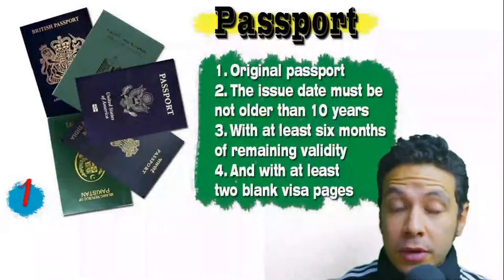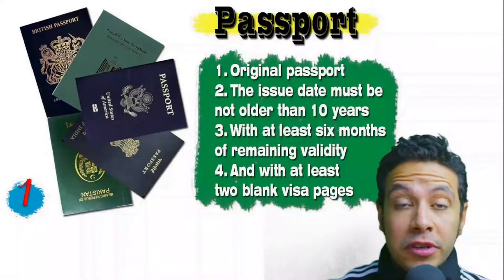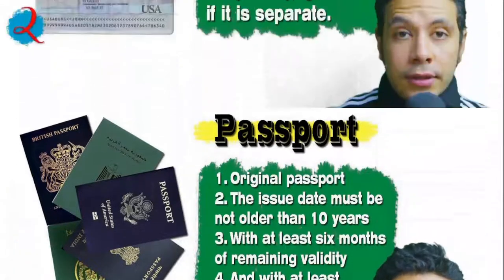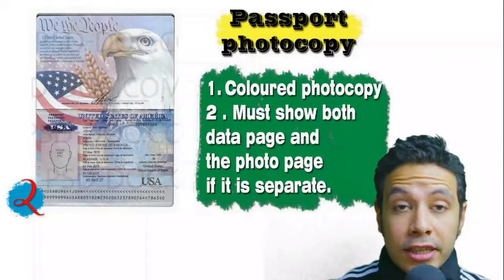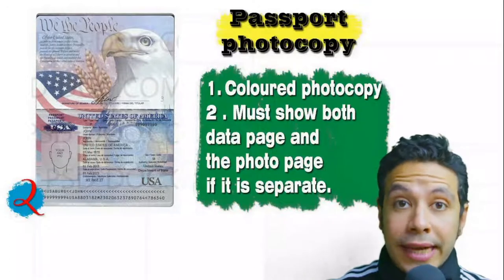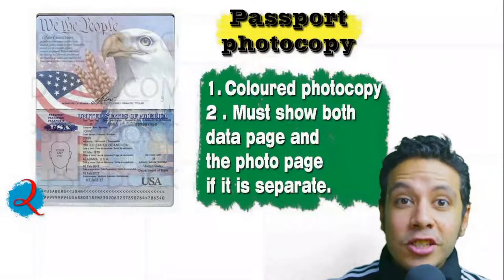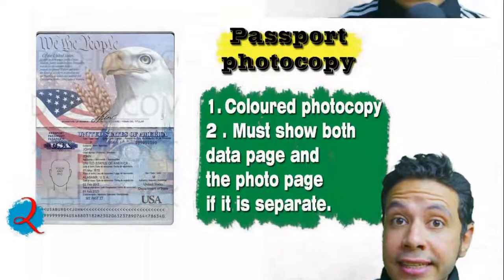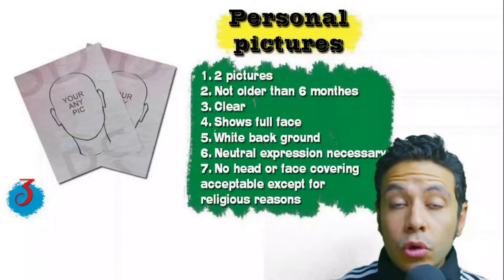Speaking about required documents: your passport must be original and not older than 10 years, with at least six months of remaining validity and at least two blank visa pages for stamps. In many cases you will also need a photocopy of your passport — it might be one copy or more — preferred to be colored, with both the data page and photo page showing. In some cases you might be required to photocopy every single page, but in general only the data page and photo page are needed.